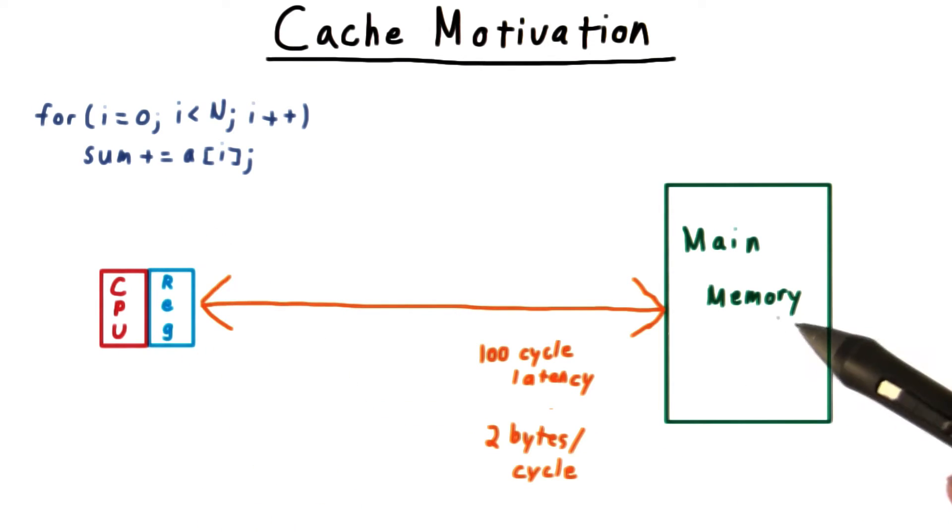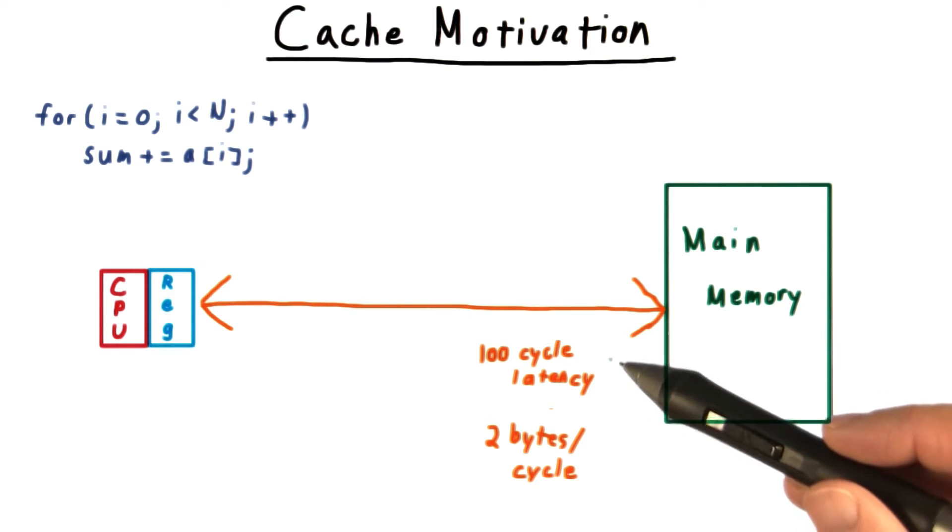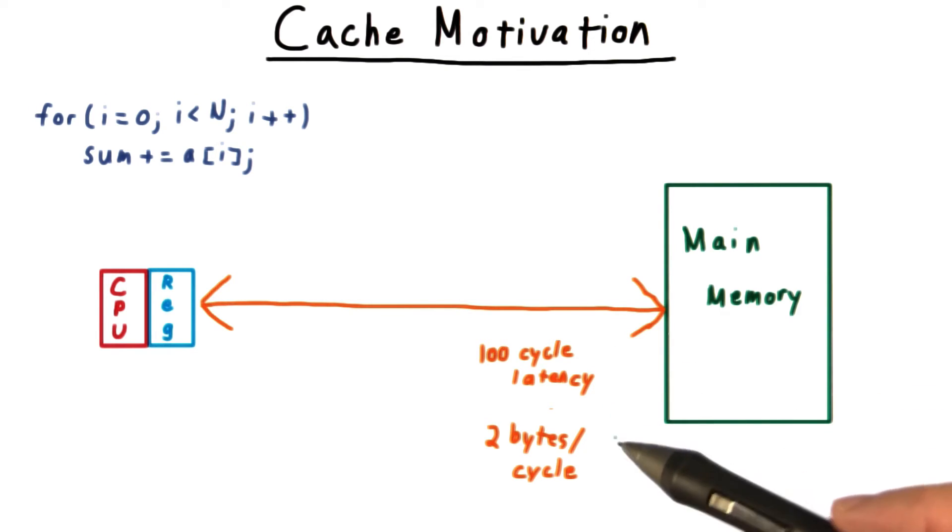A of i, however, is in main memory, and retrieving its value can take 100 CPU cycles. And even then, the bus bandwidth might only be able to pass back two bytes a cycle, or thereabouts, to get the data back.